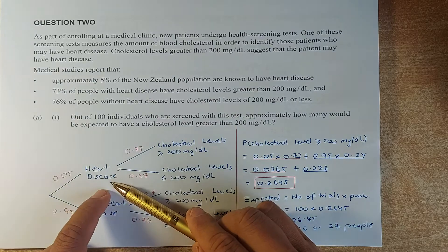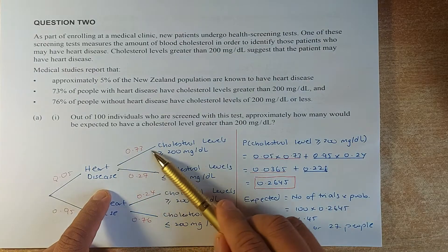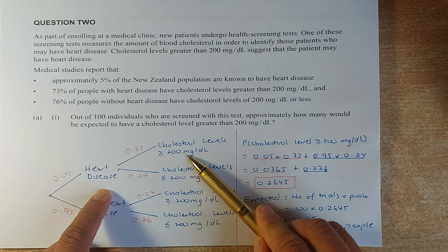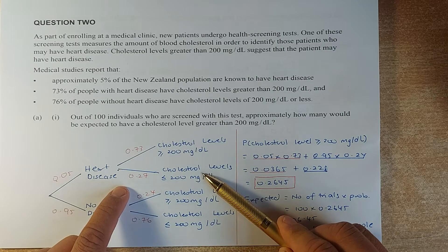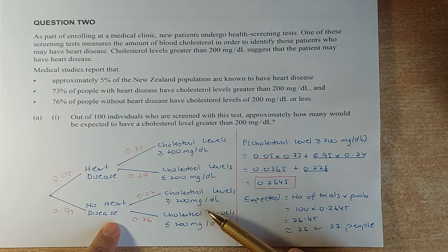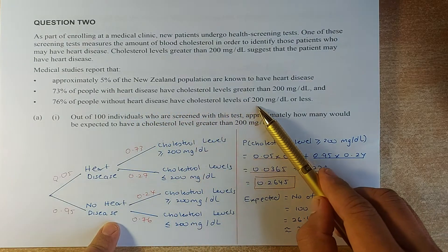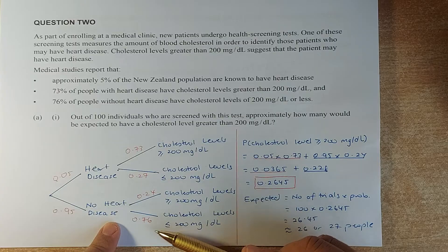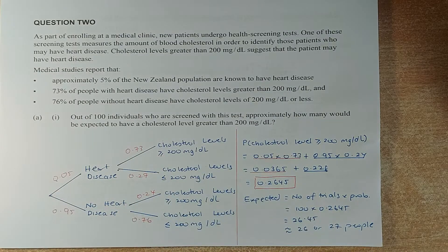Of those with heart disease, 73% have cholesterol more than 200 mg, so 27% or 0.27 have less than 200 mg. Similarly, those with no heart disease, 76% have cholesterol less than 200 mg and 0.24 have more than 200 mg. Once you have done the probability tree, it's very simple and we are going to calculate the probability.